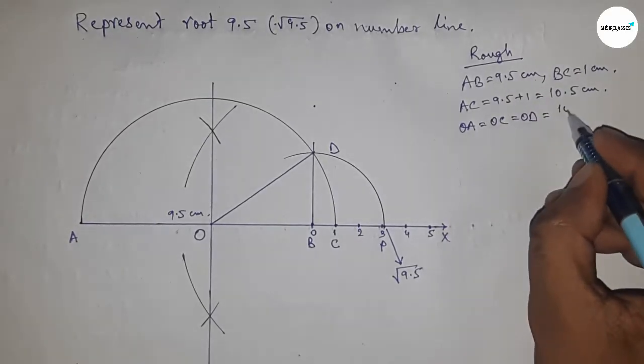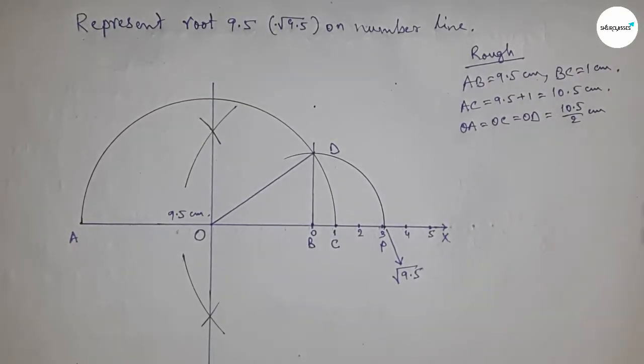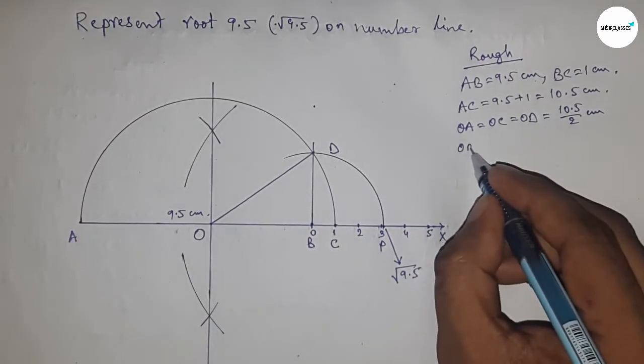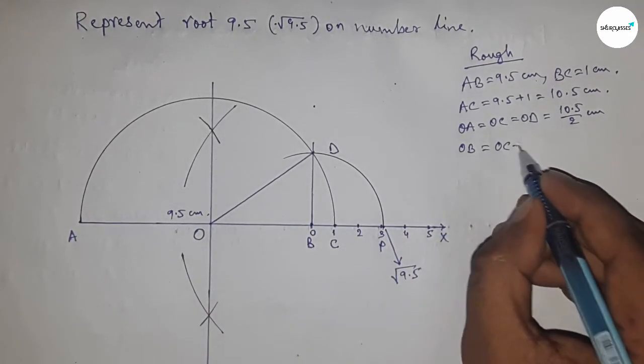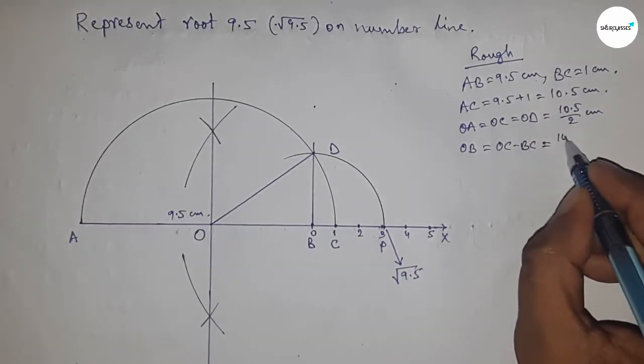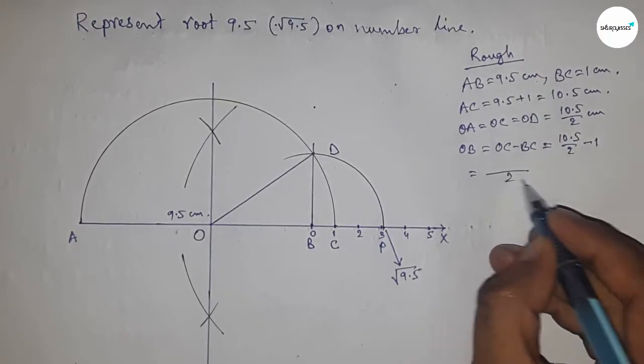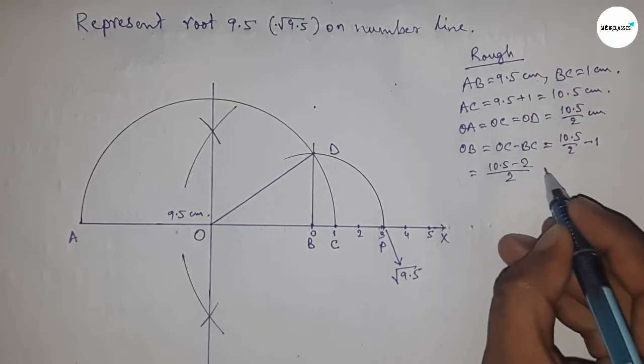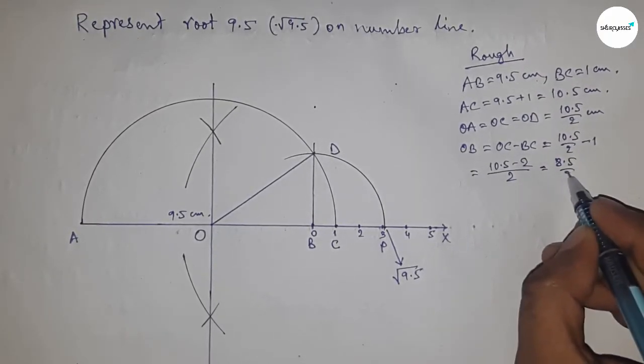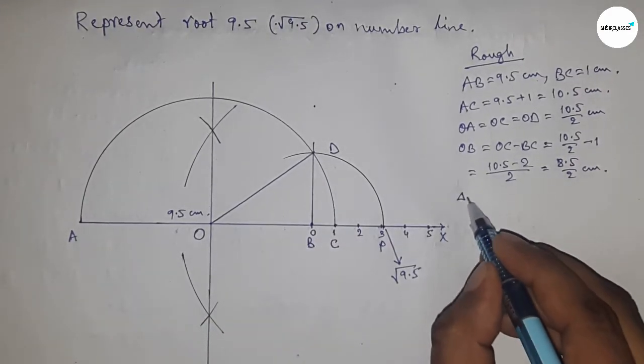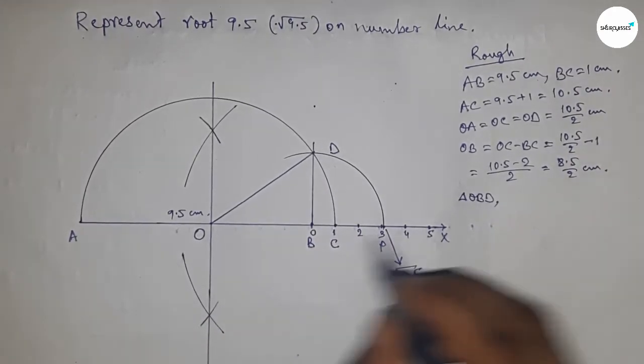From right angle triangle OBD, we can write BD equals √(OD² - OB²) by the Pythagorean theorem, where OD is the hypotenuse.